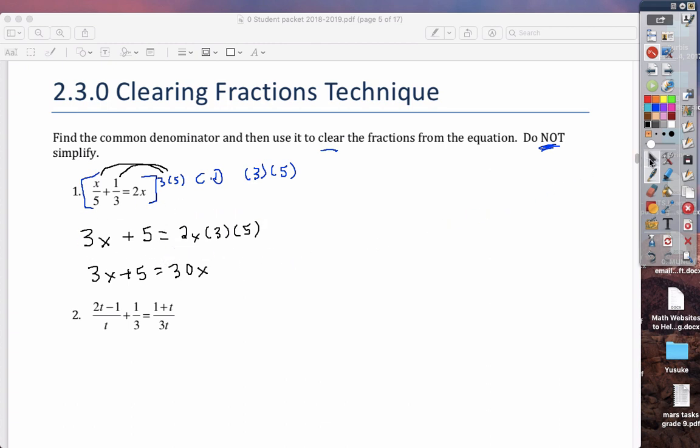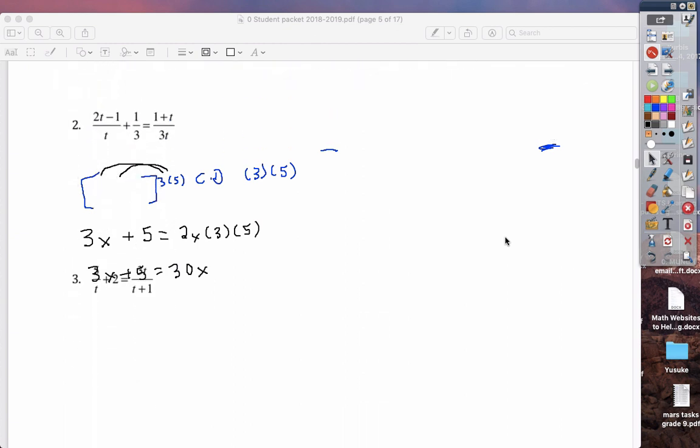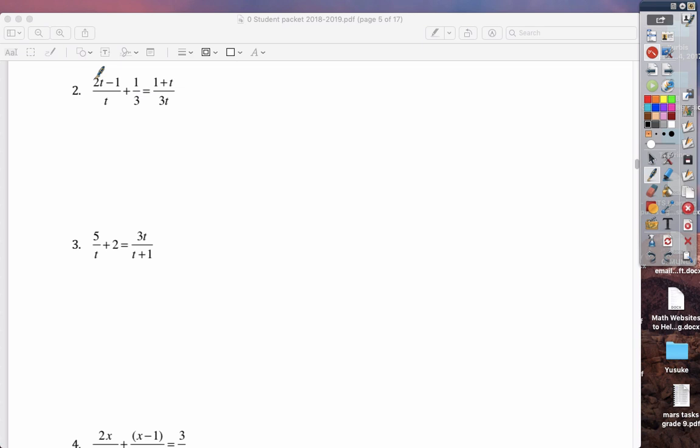Next lesson, we'll do more. So first step, identify the lowest common denominator, the common denominator. Here it's 3 and t. Then we multiply both sides of the equation by 3t.